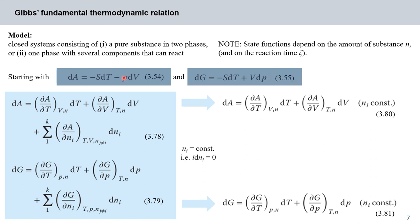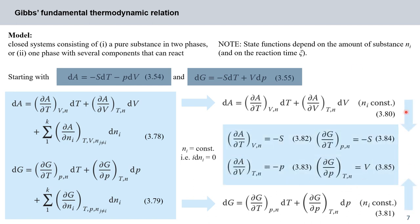Comparing these relationships to the characteristic functions 354 and 355, we can find appropriate expressions for S, V, and P as changes of free energy A and free enthalpy G. By comparing the form of these functions: minus S times dT is equivalent to (delta A / delta T) at constant V, and analogously minus S must equal (delta G / delta T) at constant pressure.